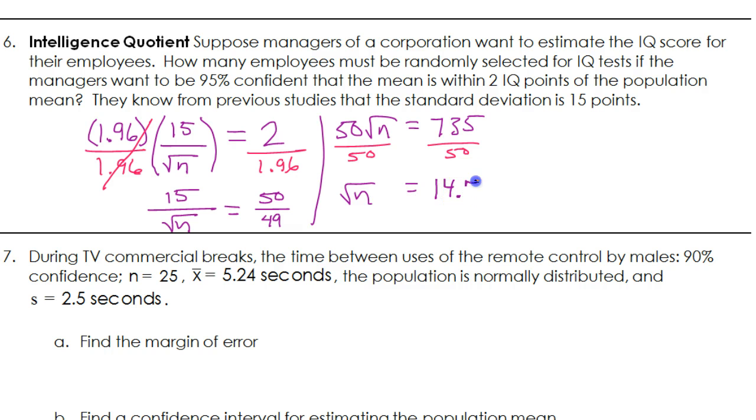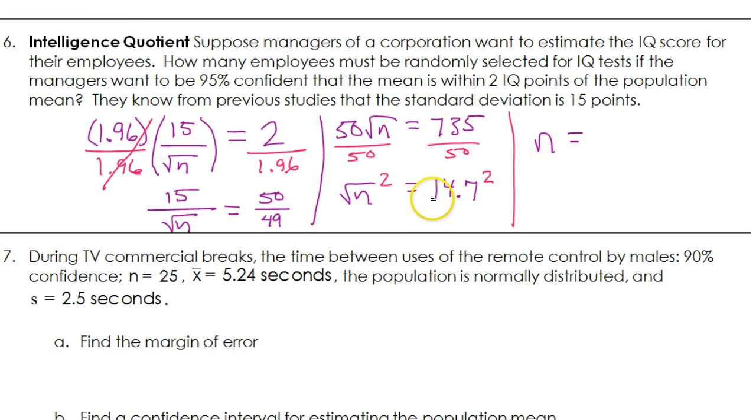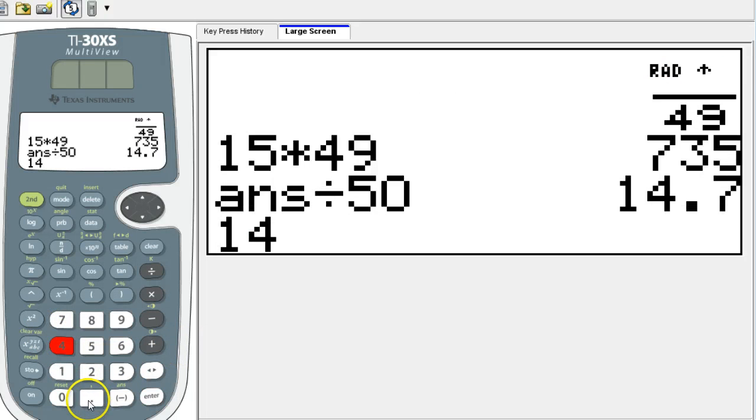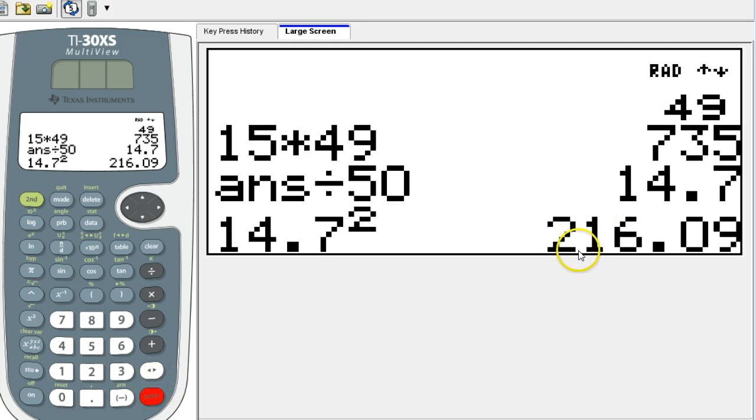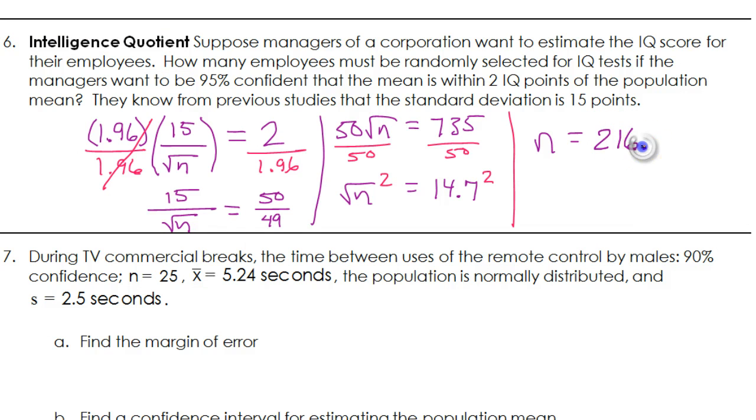Finally, to get N I'm going to square both sides. So 14.7 squared. That's giving me 216.09. We're talking about people, so we're just going to round this to the nearest whole number. So they would need to include 216 employees in the survey.